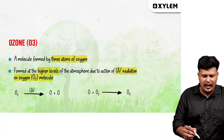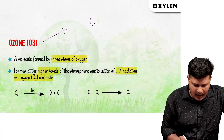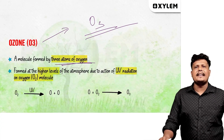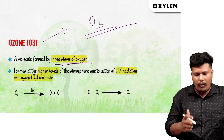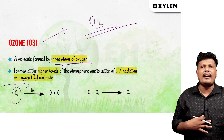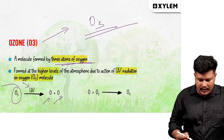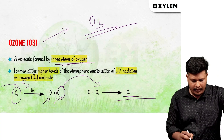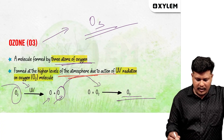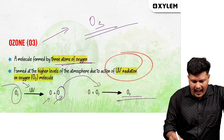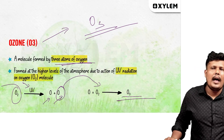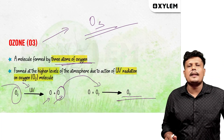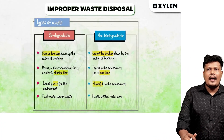The ozone layer is formed by O3, which is a triatomic molecule composed of three oxygen atoms. Oxygen gas O2, under the influence of ultraviolet radiation at higher levels of the atmosphere, splits into oxygen atoms. O plus O2 gives O3 — that is ozone. It is formed at higher levels of the atmosphere due to the action of UV radiation on oxygen molecules.